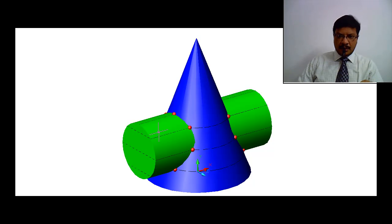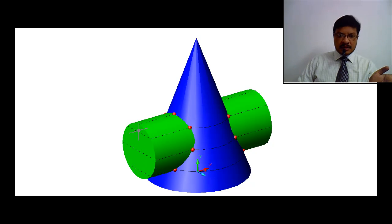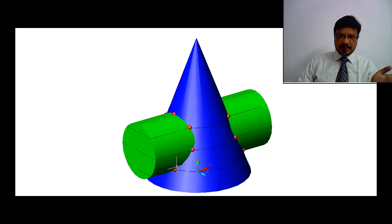Observe this model showing two solids: one is a cone and the other is a cylinder. The cylinder is completely penetrated into the cone. As a result, the curved surfaces of the cone and cylinder will intersect and produce a curved line of intersection.